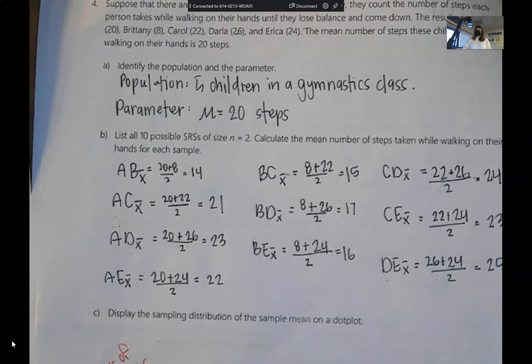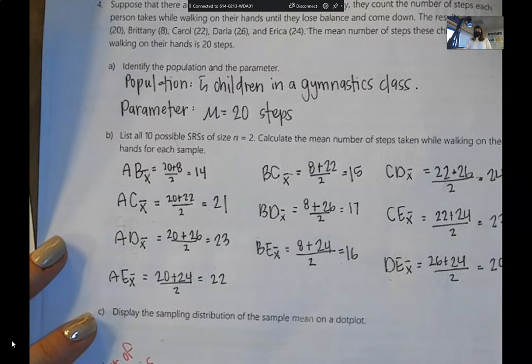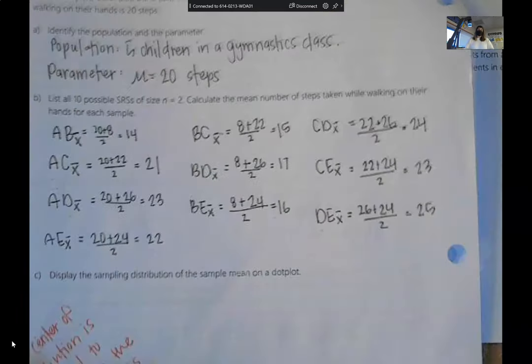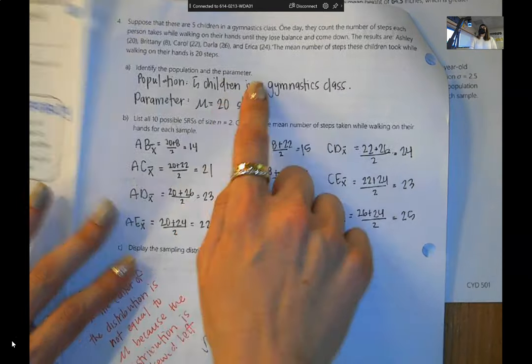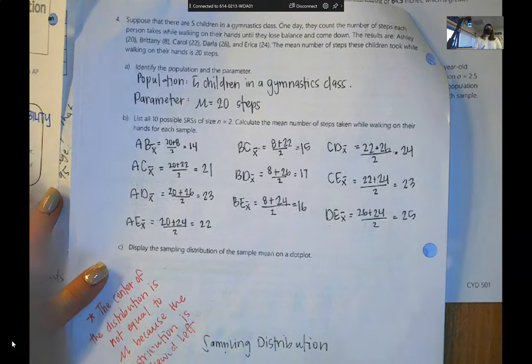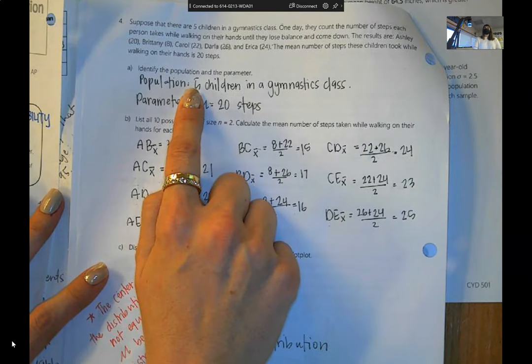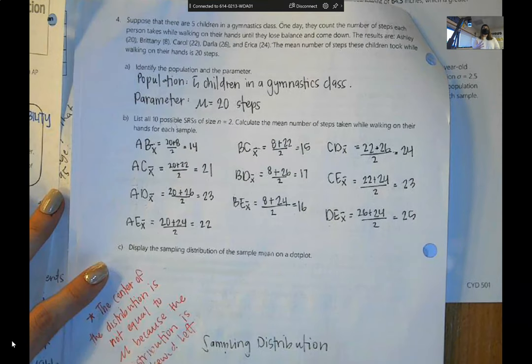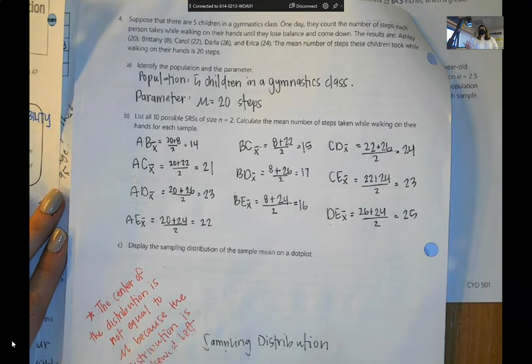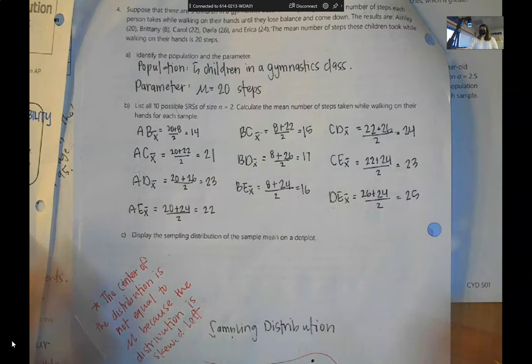We can calculate true mu to be 20 steps because our population is the five kids. Now this is kind of an unrealistic scenario though because when you just have five kids, you don't need to take a sample. Averaging five numbers is easy. They're using this example though to help you understand a sampling distribution.